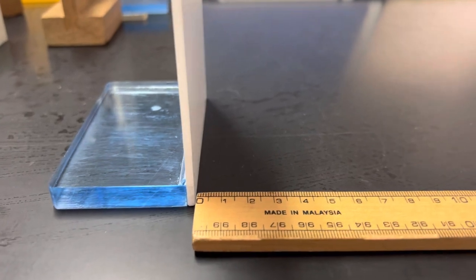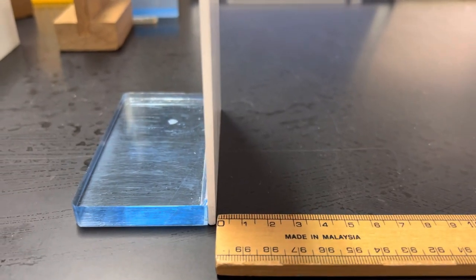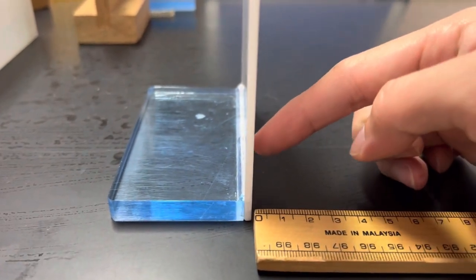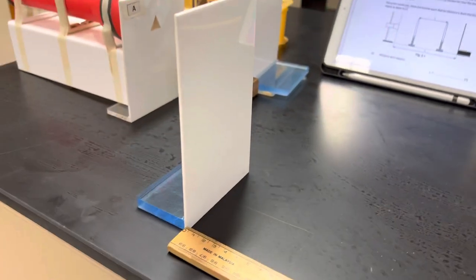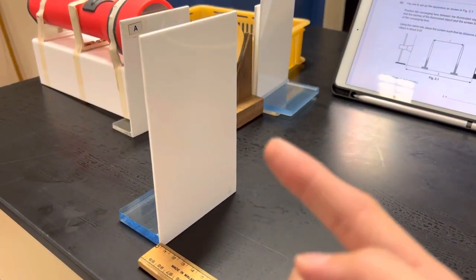Align the ruler such that the 0 cm is aligned with the outer edge of the screen. The screen is the one without the triangle.